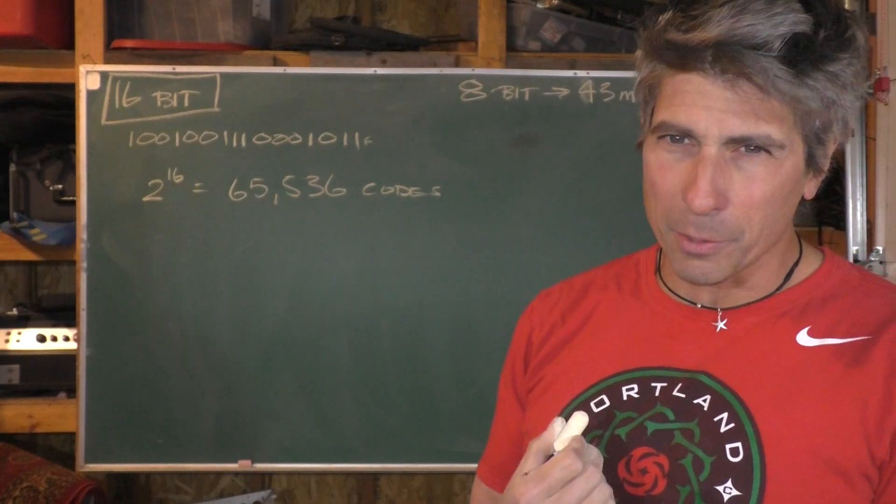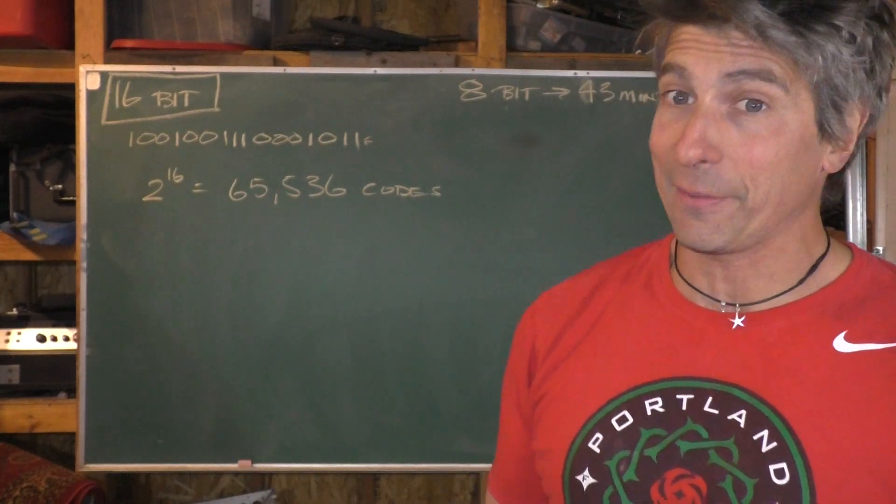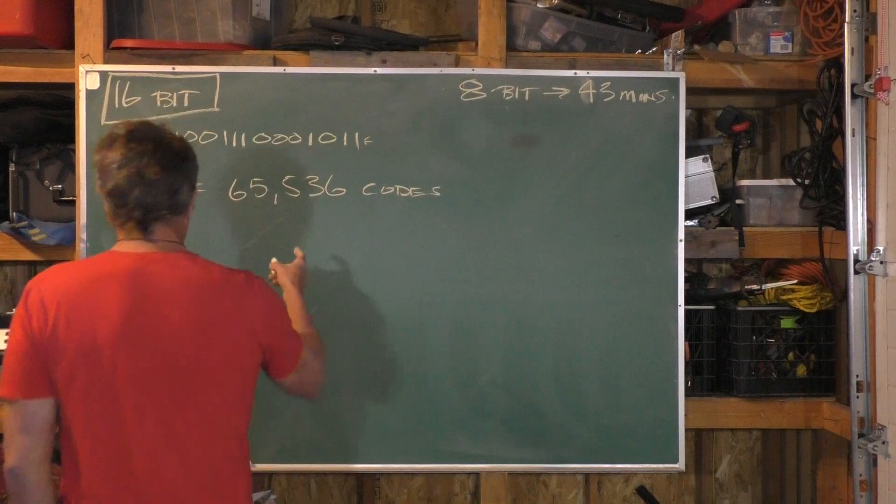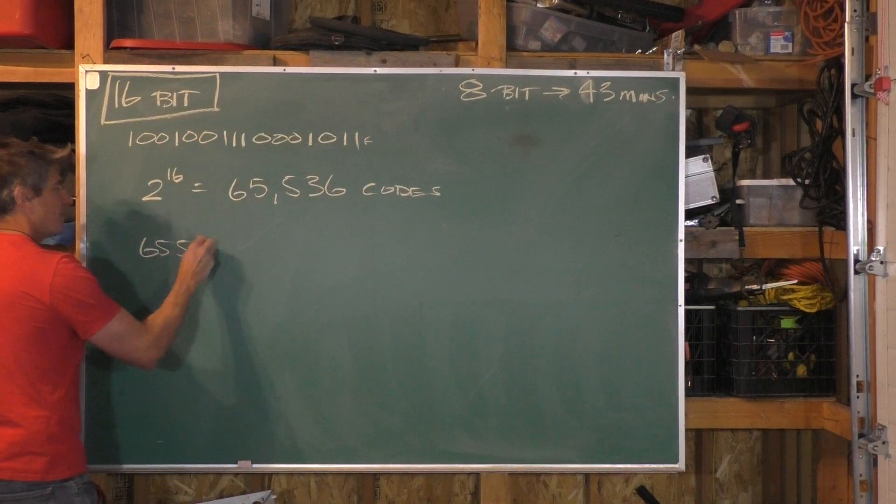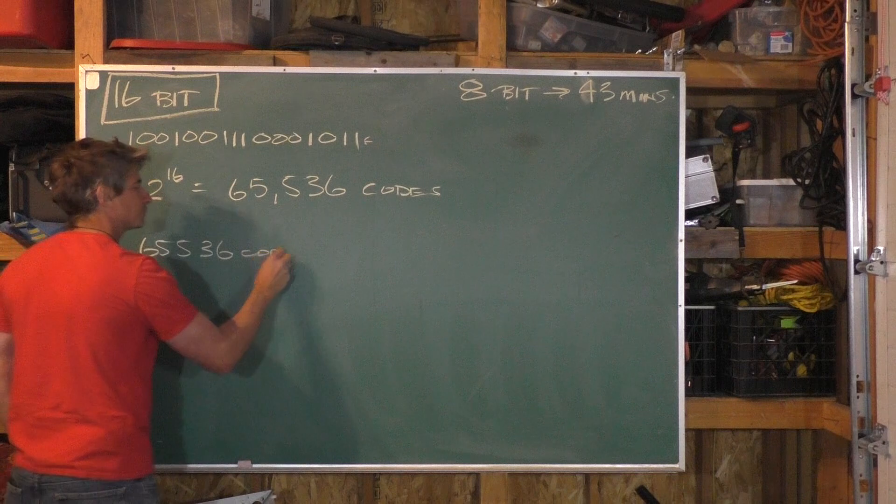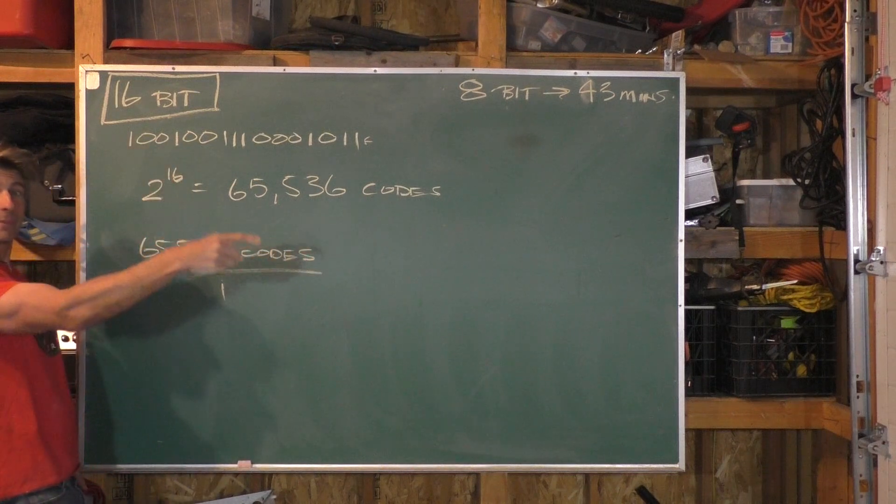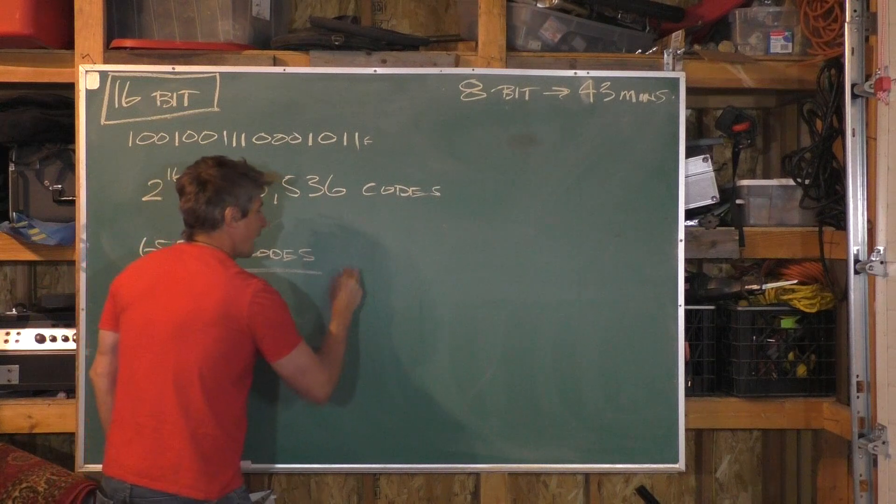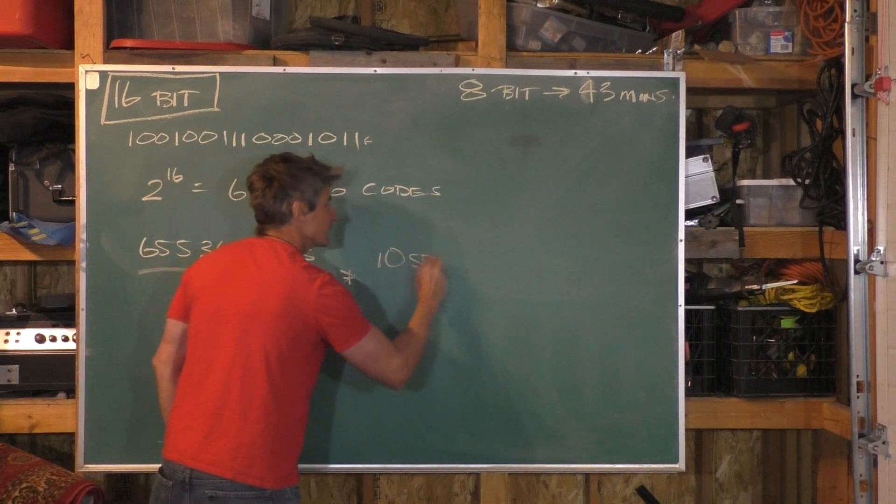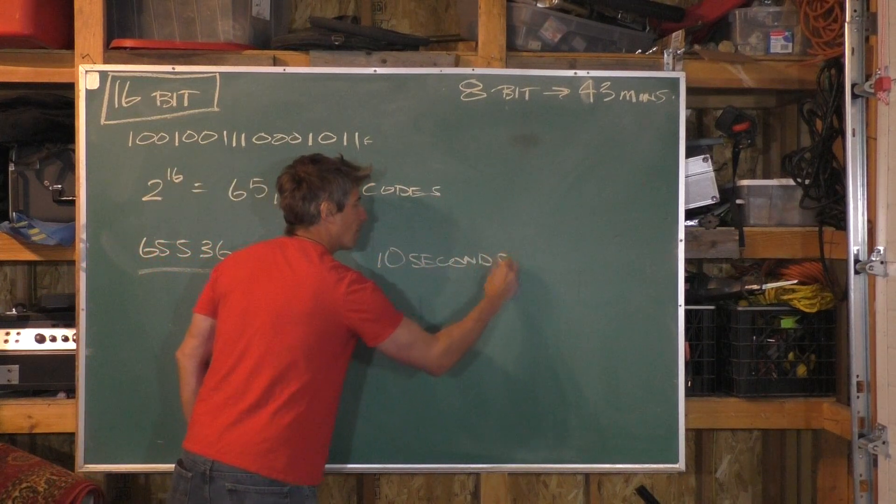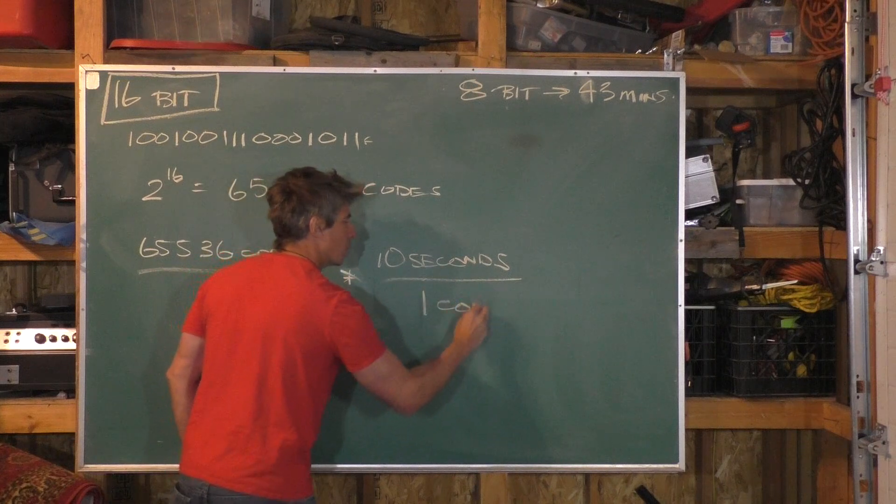Again, Sean's a slow computer, any supercomputer can do this a lot faster. So let's start with 65,536 codes, and let's do the same kind of conversion we did before, where every 10 seconds we can check one code.